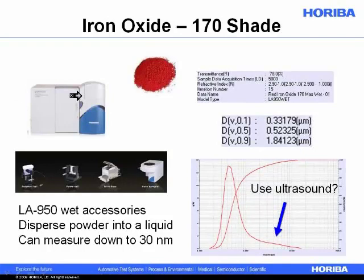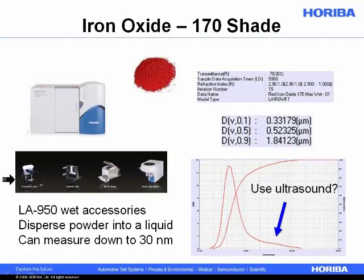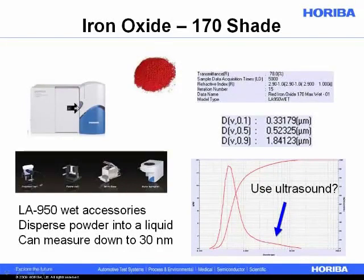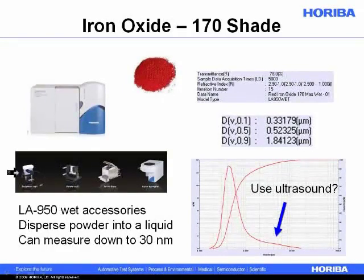Here is a wet reservoir — we simply recirculate the sample for the measurement. The LA-950 has several wet accessories, and for these samples, if dispersed in water, we just use the base system, which has a reservoir on the range of a liter. But we can use smaller volumes if we wish, for instance when we need to suspend the sample in a solvent and want to minimize solvent use.